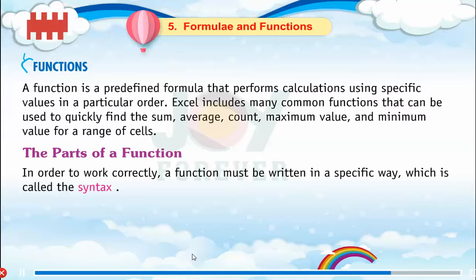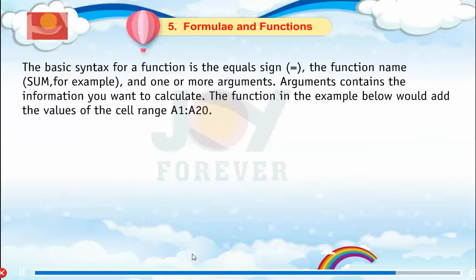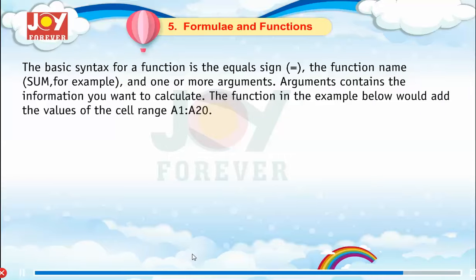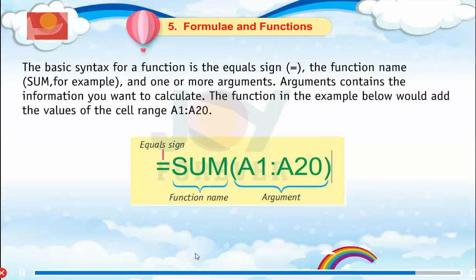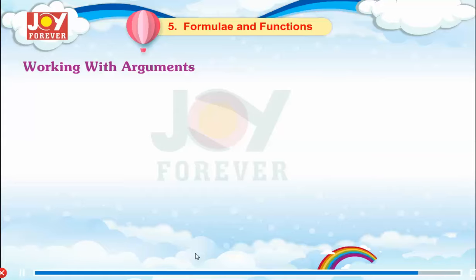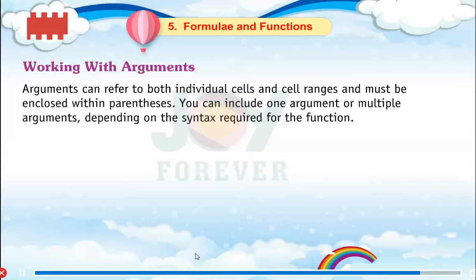In order to work correctly, a function must be written in a specific way, which is called the syntax. The basic syntax for a function is the equal sign, followed by the function name — for example, SUM — and one or more arguments. Arguments contain the information you want to calculate. The function in the example below would add the values of the cell range A1 to A20.